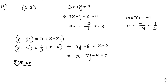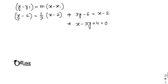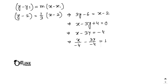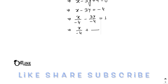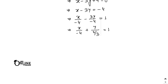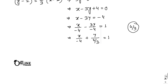To find the y-intercept, write x minus 3y equal to minus 4, then x/(minus 4) plus y/(4/3) equal to 1. Therefore the y-intercept b equals 4/3.